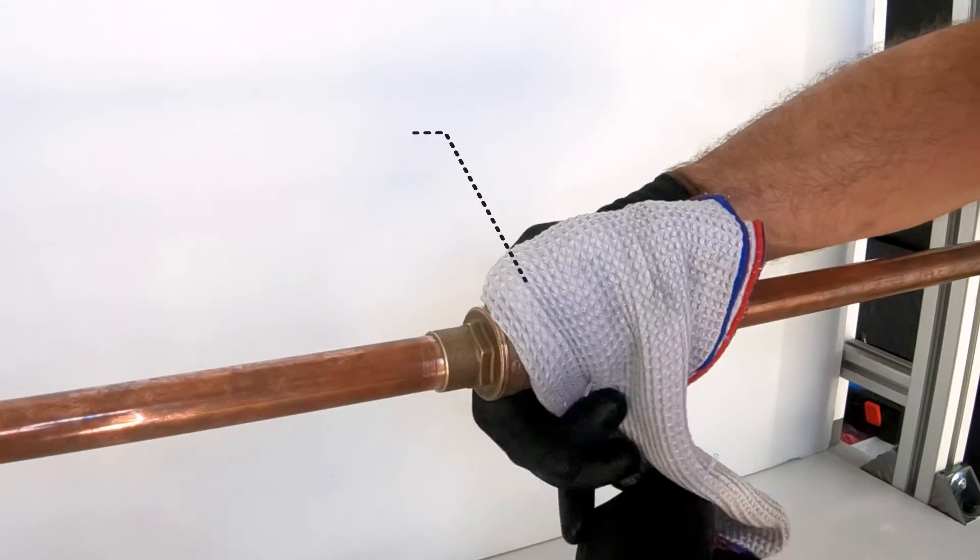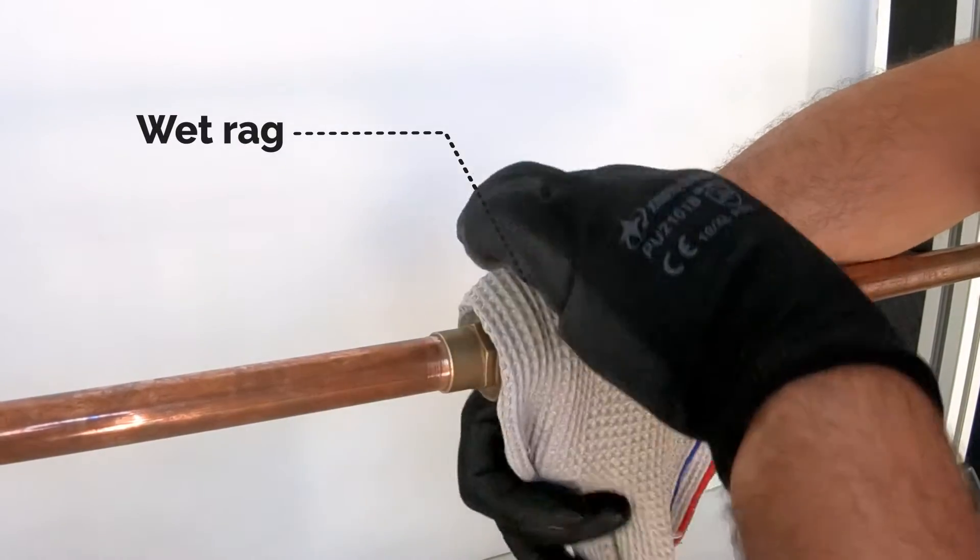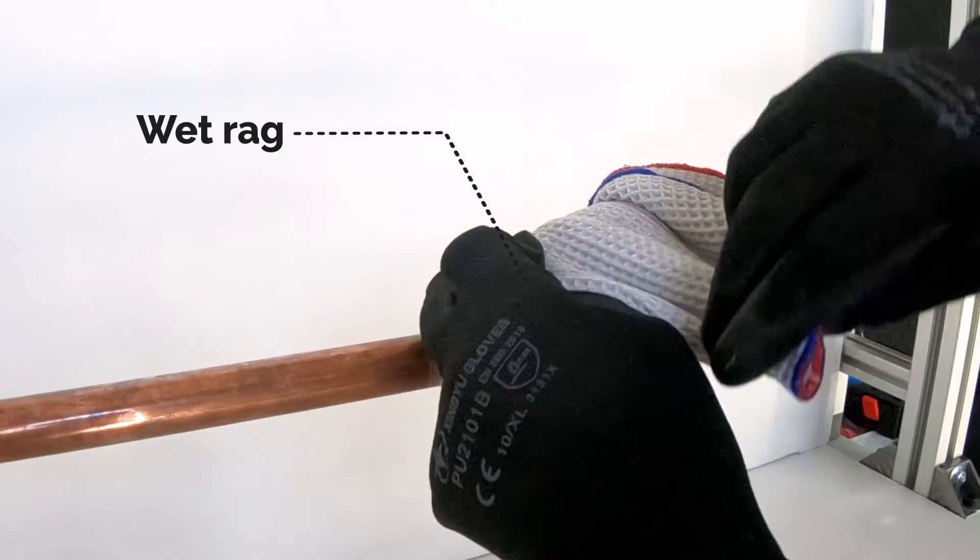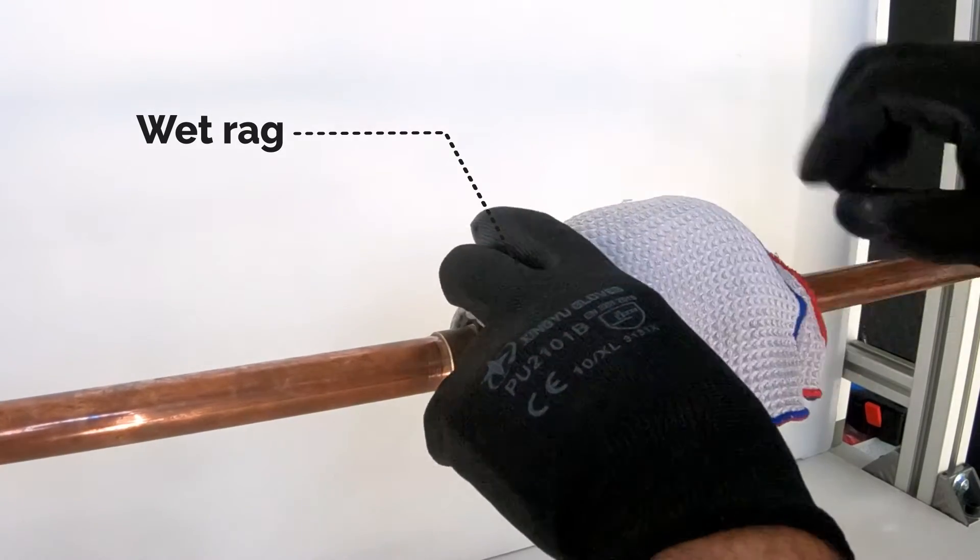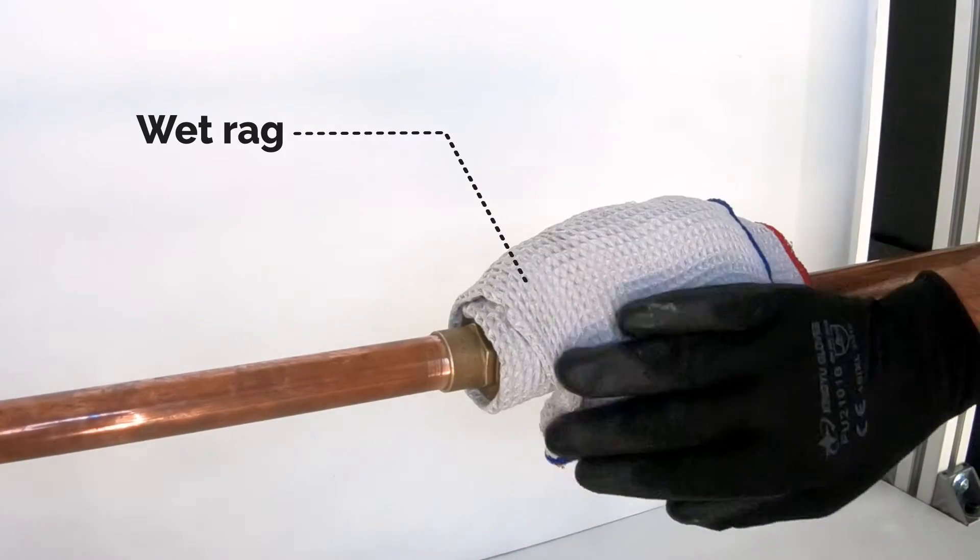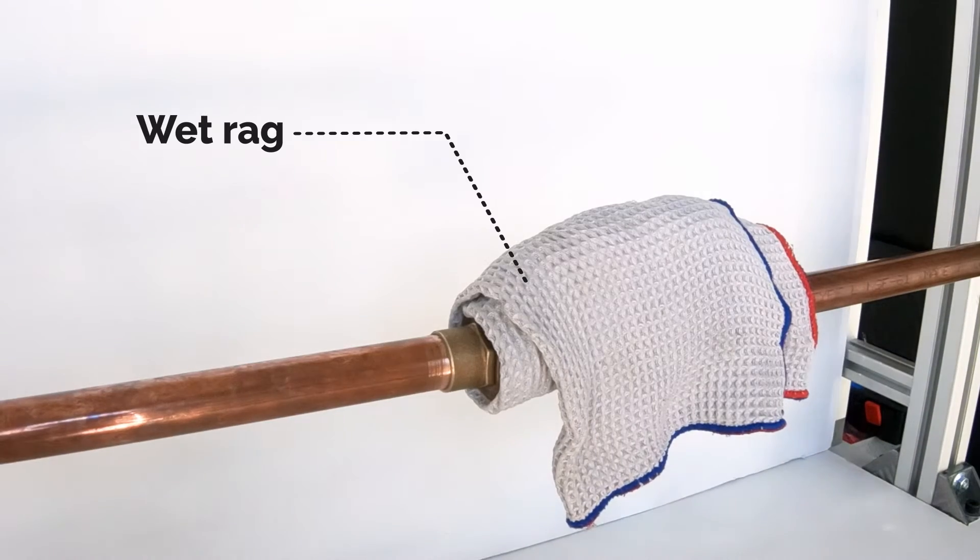We strongly recommend wrapping the valve with a wet rag. This functions as a cooling technique and protection from excess heat that can potentially damage internal seats or O-rings. Always be sure to keep flame away from the rag to avoid risk of fire.